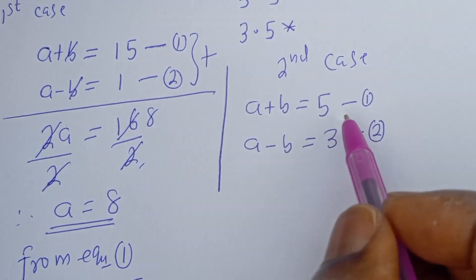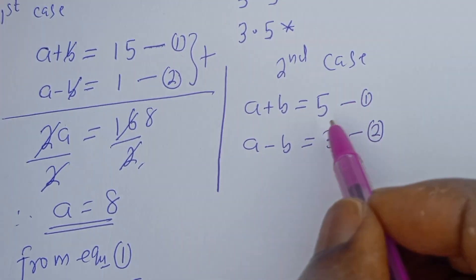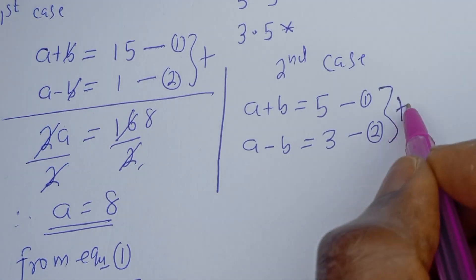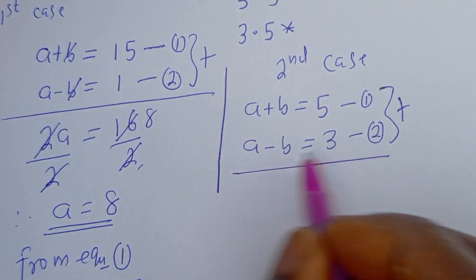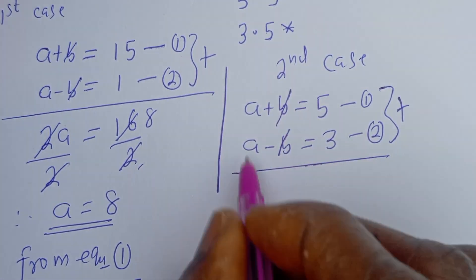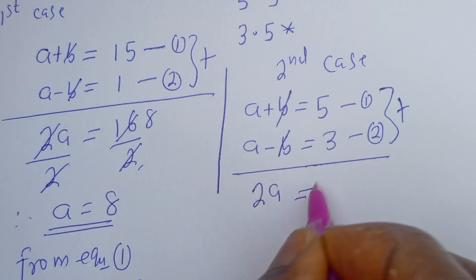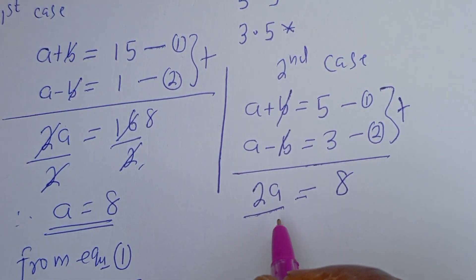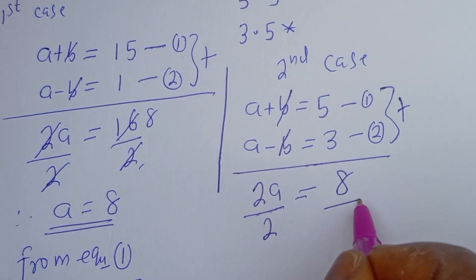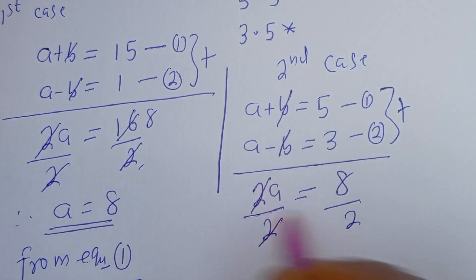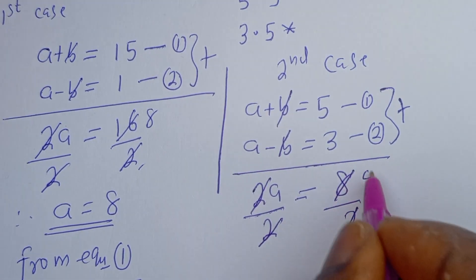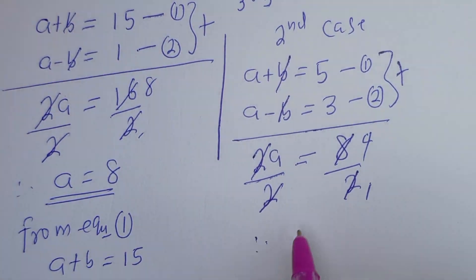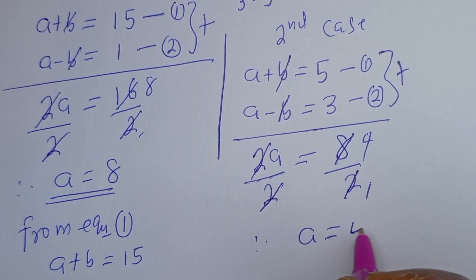Now from the second case, this is also a simultaneous equation solved using the elimination method. Let's add the two equations together. We have a + a = 5 + 3, that is 2a = 8. Let's divide by 2, so a = 4.